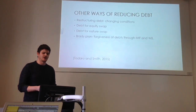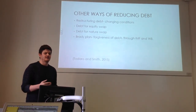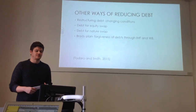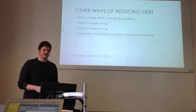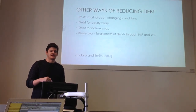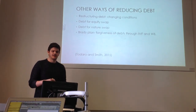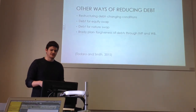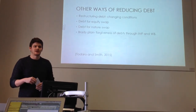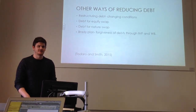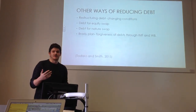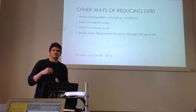Finally, some other ways of reducing debt: restructuring debt by changing the conditions — perhaps increasing the repayment period or reducing the interest rate. A debt-for-equity swap, where a company can trade debt for shares in domestic companies at a discounted rate. And a debt-for-nature swap, where an organisation such as the WWF buys debt that Mexico owes to America, and in return Mexico commits to environmental conservation obligations.